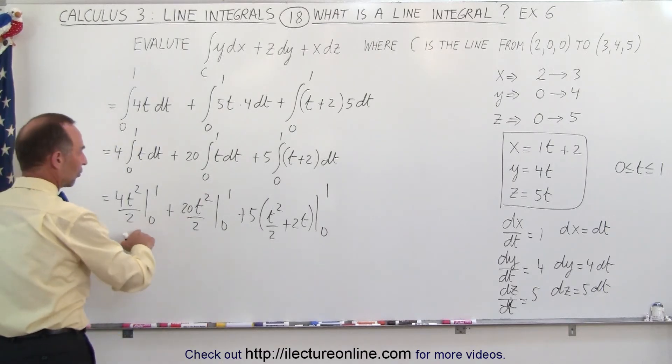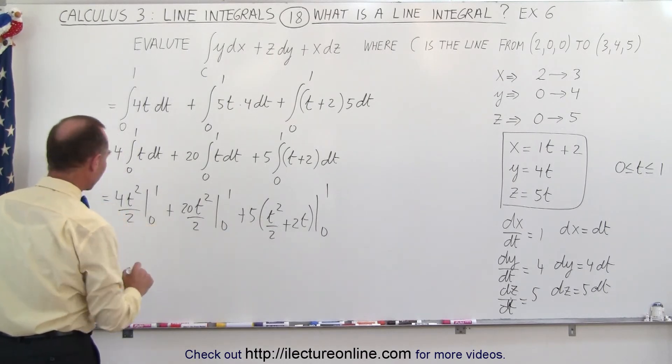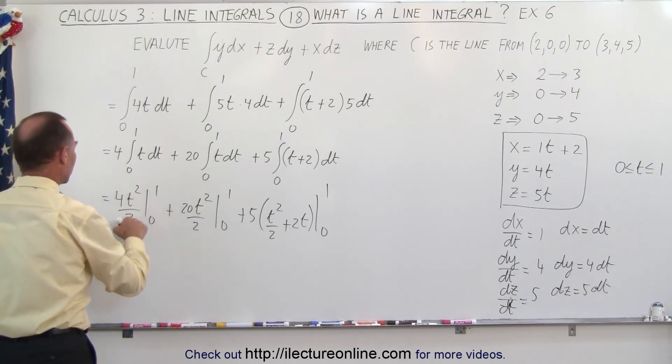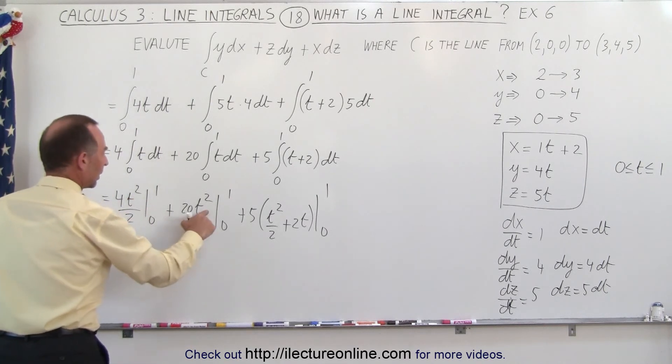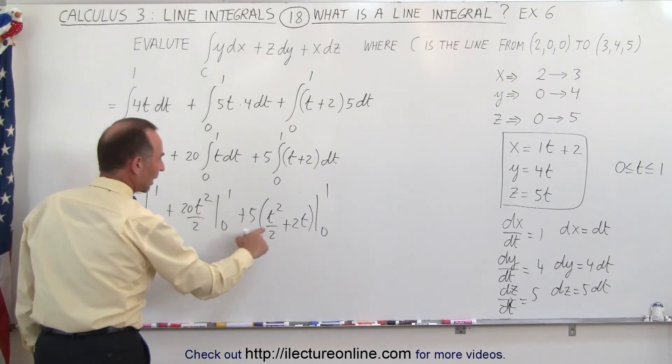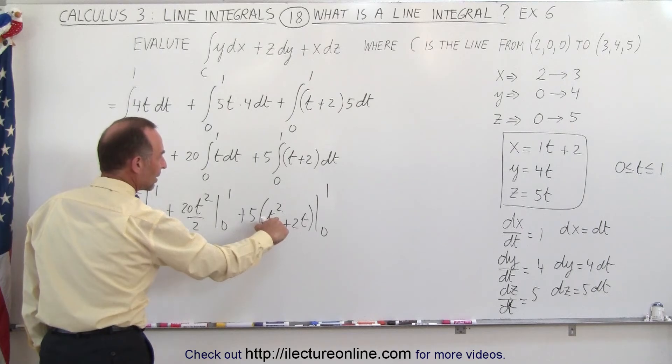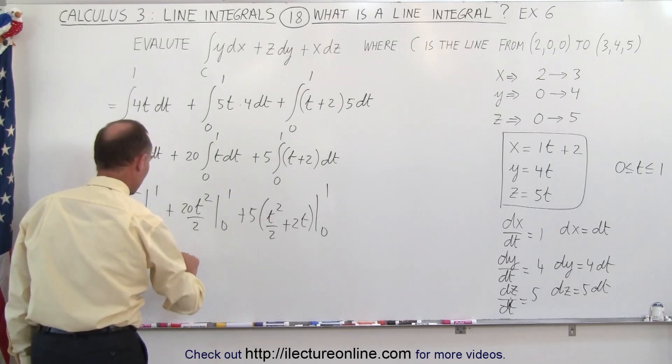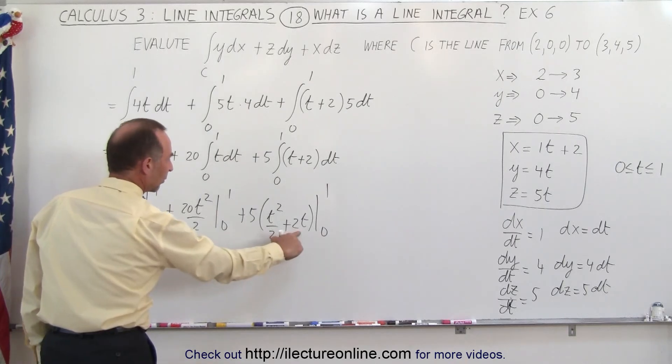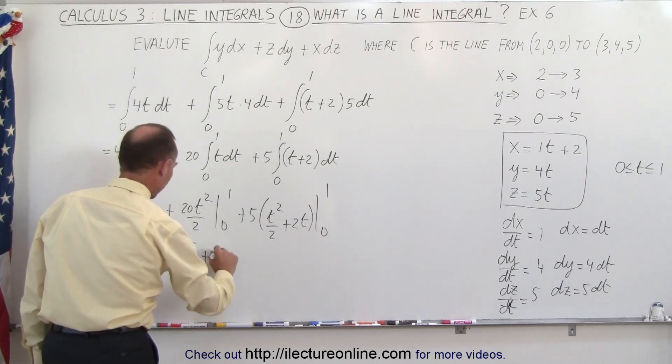Plugging in the values, of course, when plugging in the lower values we get 0, plugging in the upper values we get 4 times 1 over 2, which is 2. Here we get 20 times 1 over 2, which is plus 10, and here we get this one here, that would be 1 half times 5, which would be plus 5 over 2, and then plus, here we have 5 times 2, which is plus 10.